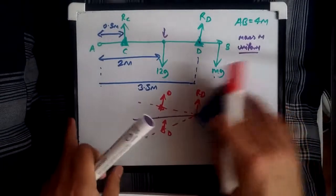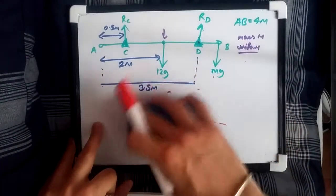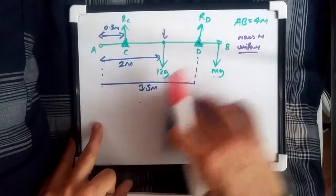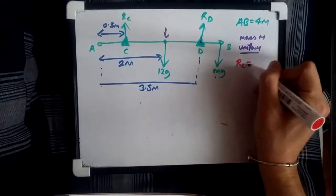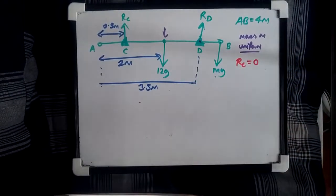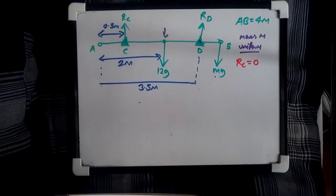So, without further ado, let's solve this equation. So, if the rod is tilting about the point D, hence that means every reaction would be zero. So this means RC off the bat is zero. Now, let's resolve it properly, yeah?